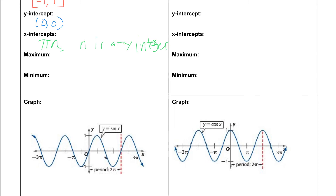Next let's take a look at our maximum value. We can see the maximum value we reach is positive 1, and this is going to happen an infinite number of times. Our maximum of 1 occurs at x equals π/2, and then it keeps happening every 2π, so we write it as π/2 plus 2nπ, where n is any integer.